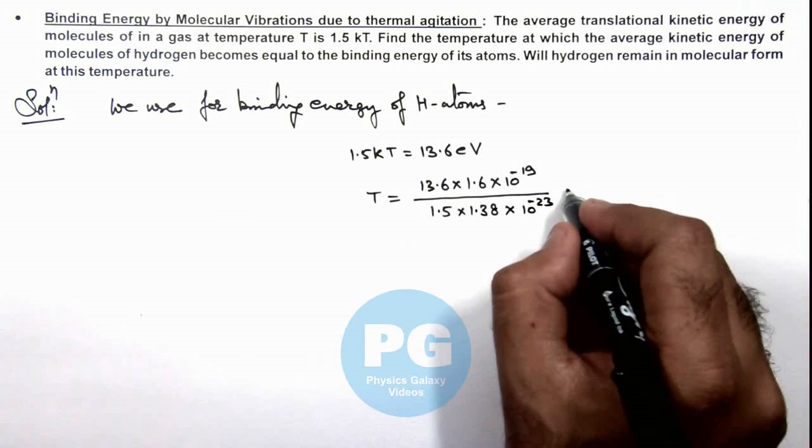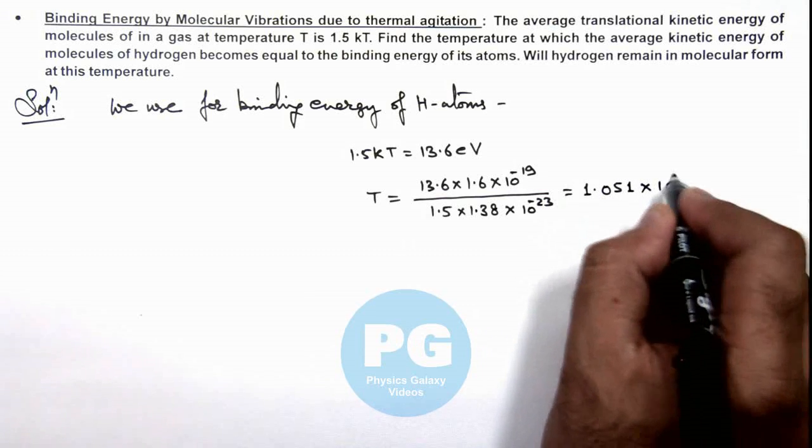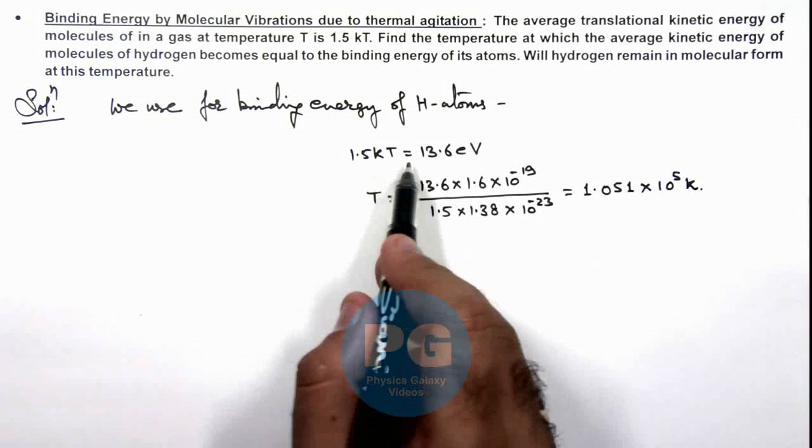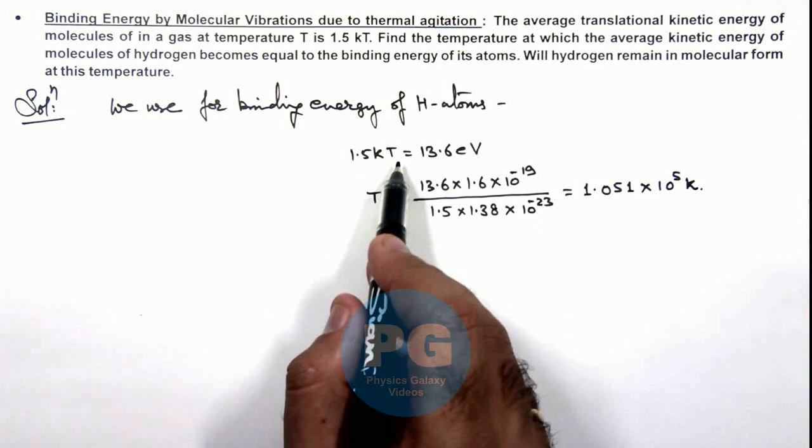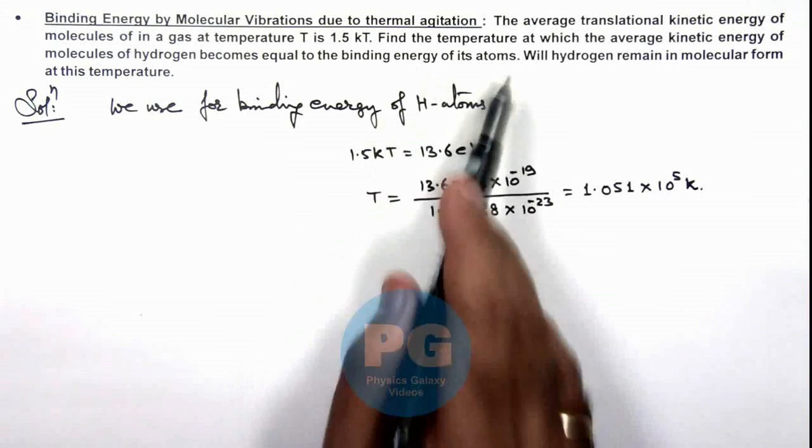On solving we get 1.051 multiplied by 10 to power 5 kelvin. So at this temperature, this average translational kinetic energy of hydrogen molecules will be equal to the binding energy of its atom.